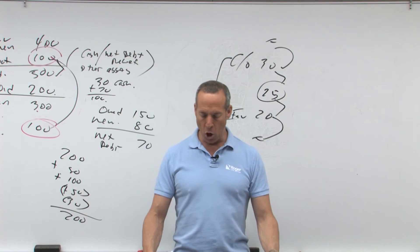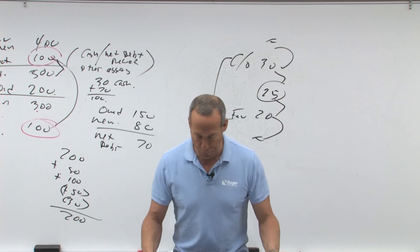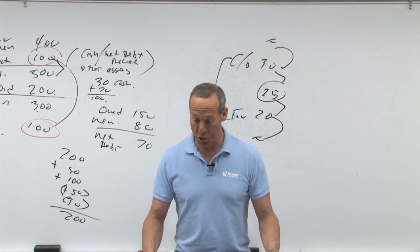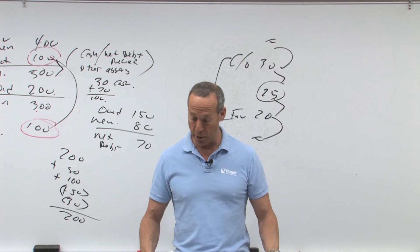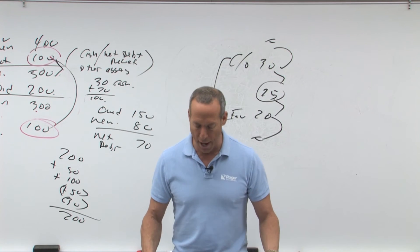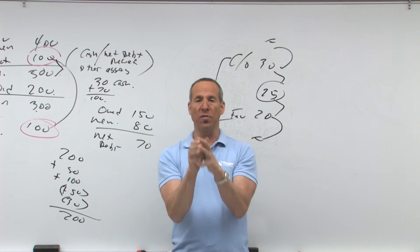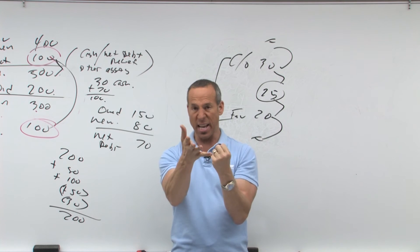Number 12. An office building owned by John C. was condemned by the state on January 2nd, X2. John received the condemnation award on March 1st, X3. In order to qualify for non-recognition of gain in this involuntary conversion, what is the last date for John to acquire qualified replacement property? So, our house was condemned. Remember, if it's destroyed, two years; condemnation, three years—that's eminent domain, government takes it, they condemn it.